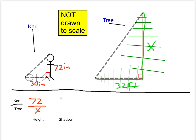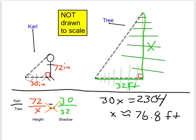Carl's shadow is 30 inches long. The tree's shadow is 32 feet long. Since these two triangles are similar, we have a proportion that we can solve using cross multiplication. We have 30 times x equals 72 times 32, and so our final answer is 76.8 feet. That's how tall the tree is.